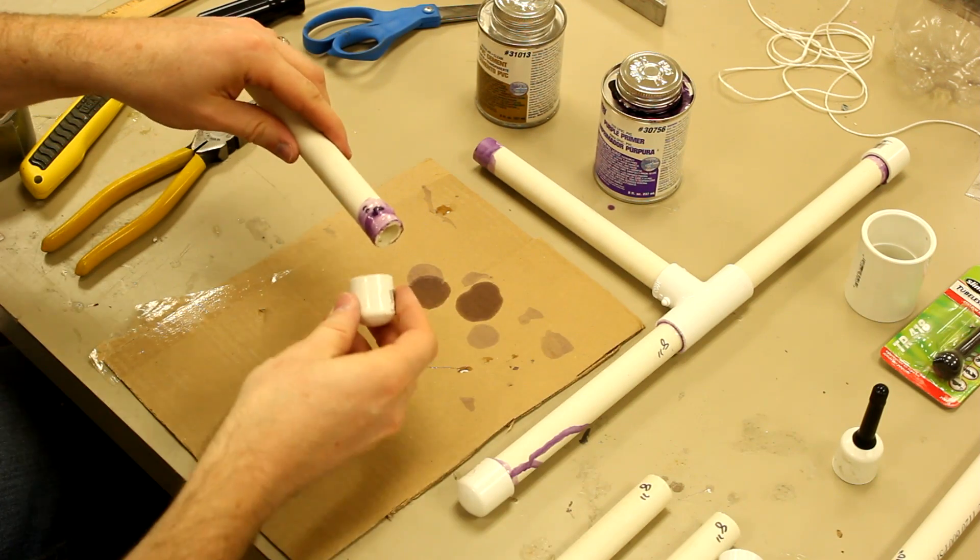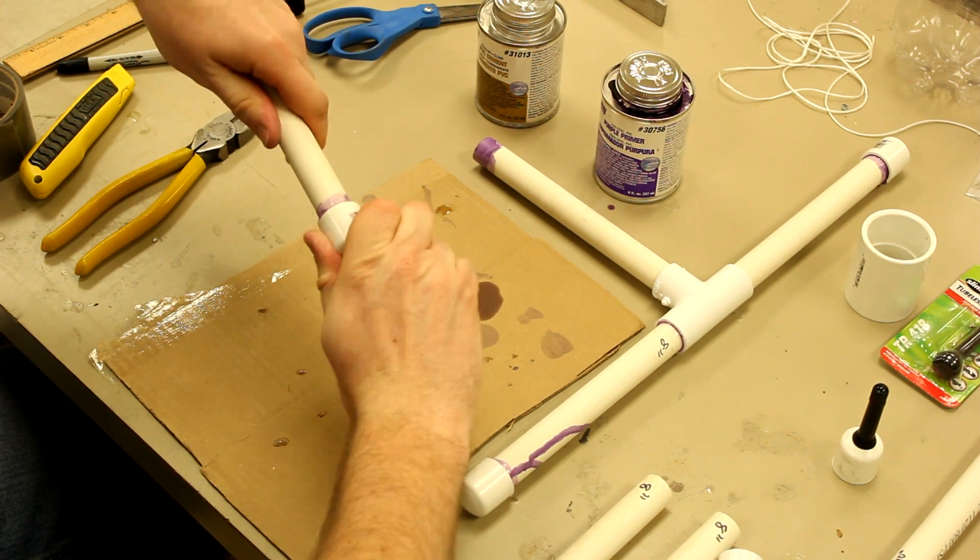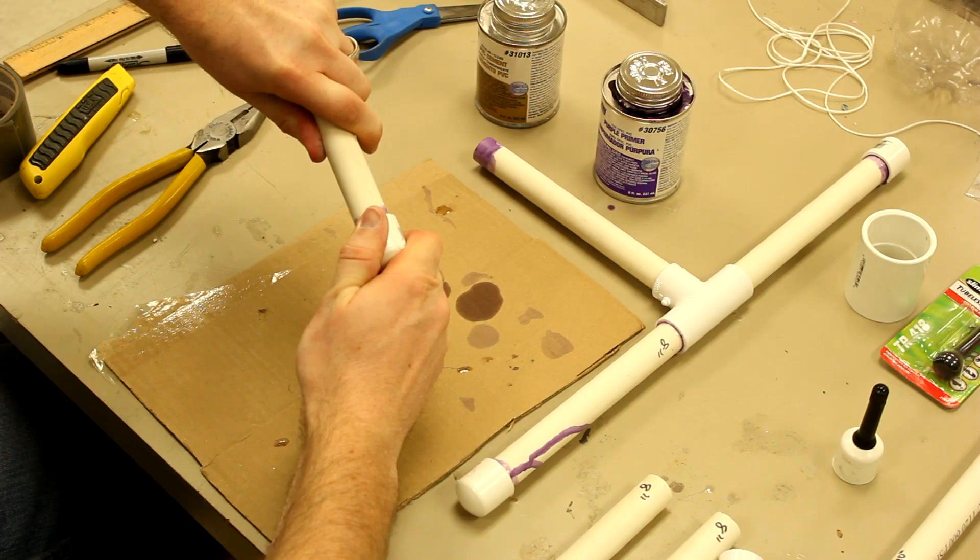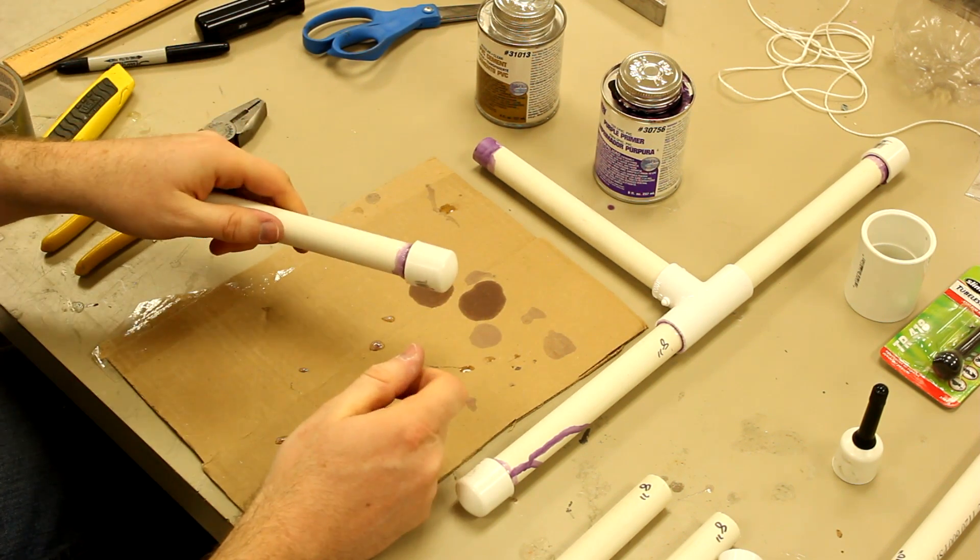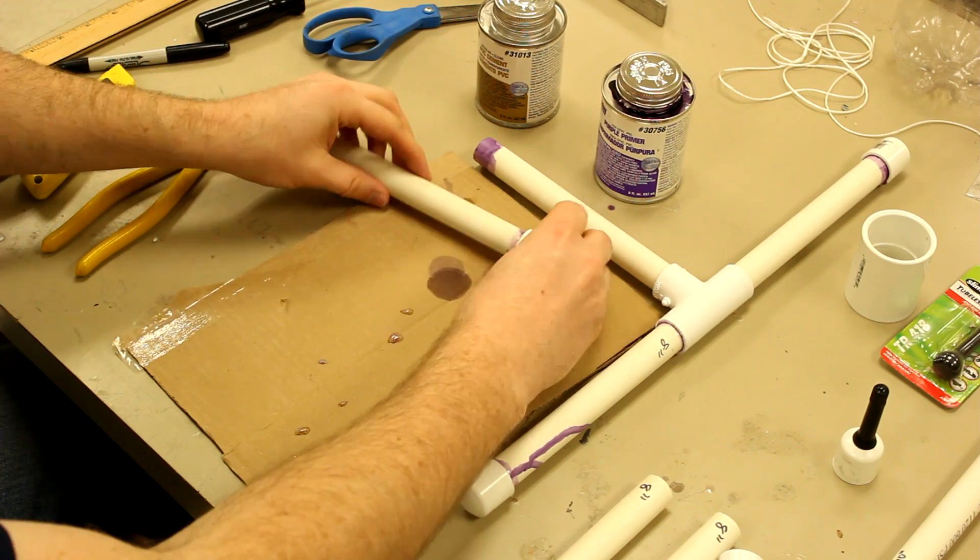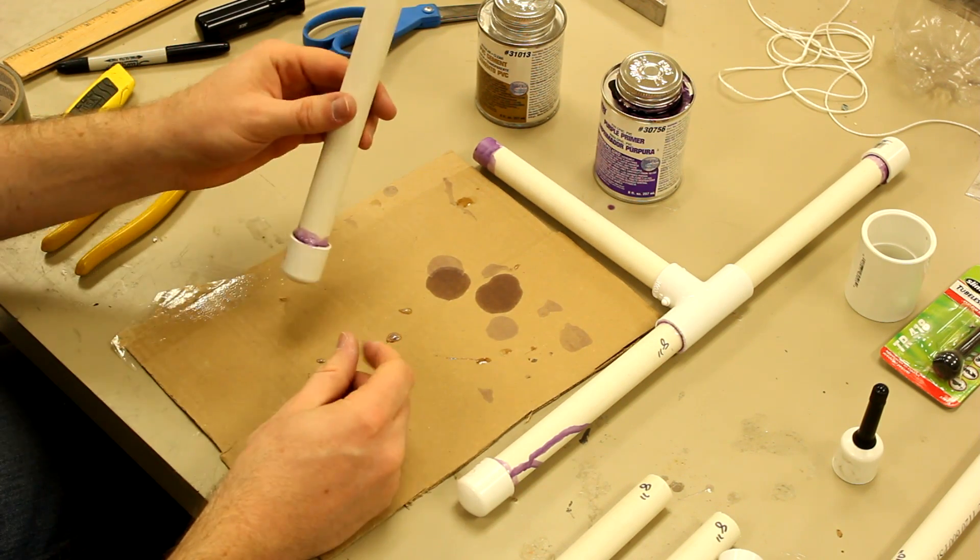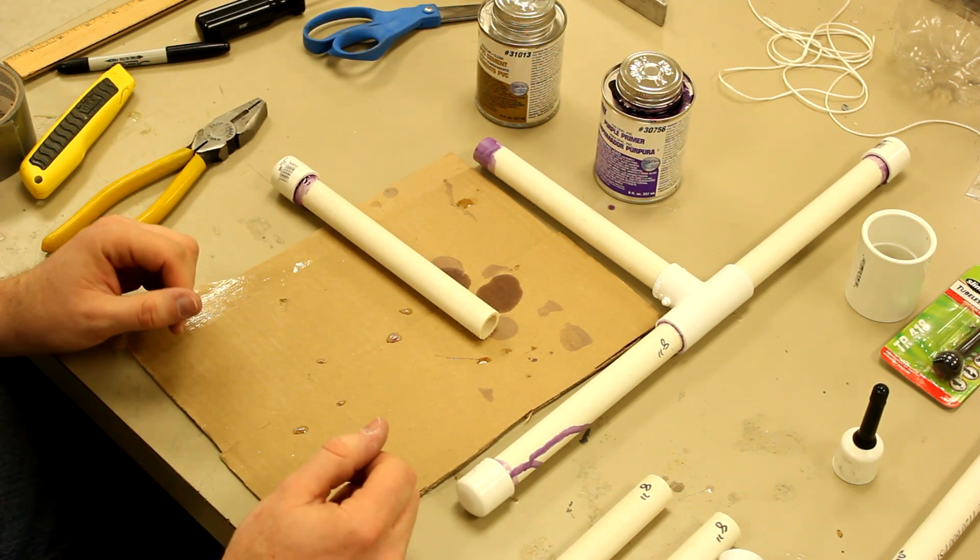Then you'll put on one of your end caps and twist it about a quarter turn and you'll feel it lock and it'll get to where you can't even move it fairly quickly. That'll make the seal and that's the basis of putting the pipe together.